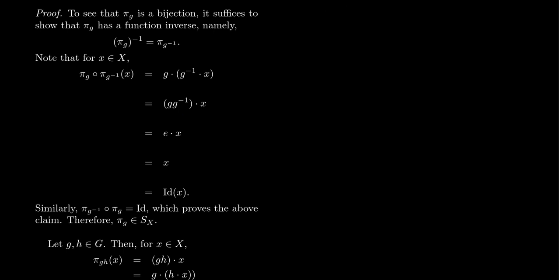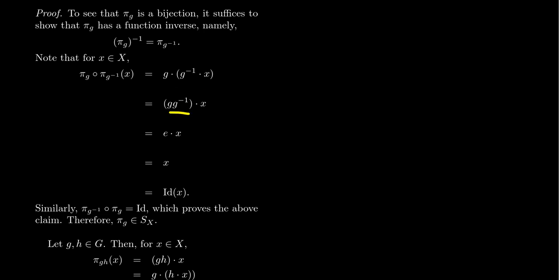Let's go through the calculation element-wise. Take an arbitrary element x of the domain. π_g composed with π_{g⁻¹} of x: by definition π_{g⁻¹}(x) = g⁻¹ · x, and then π_g acts on that to give g · (g⁻¹ · x). By the compatibility axiom of the group action, this becomes (g g⁻¹) · x, and g g⁻¹ is the identity, which does nothing to x. So we get back x — exactly what the identity function should do. Since x was arbitrary, π_g ∘ π_{g⁻¹} = id, and by similar reasoning π_{g⁻¹} ∘ π_g = id as well.